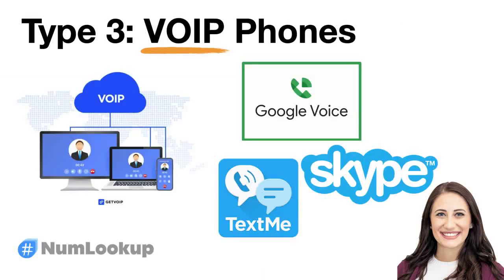The third and most dangerous type is the VoIP phone. These are basically the hipster of phones — they use the internet to make calls, because regular phone lines are too mainstream. Great for reminding folks you're a geek, or someone to be cautious of, until the Wi-Fi drops mid-call. These are loved by scammers and catfishes. Beware!